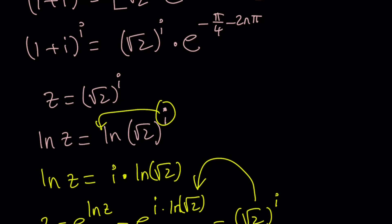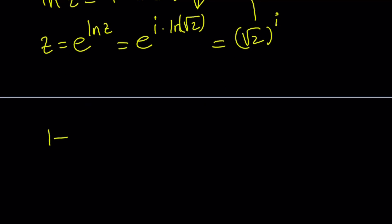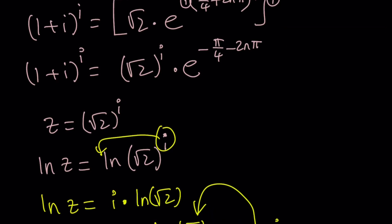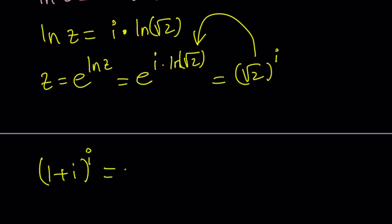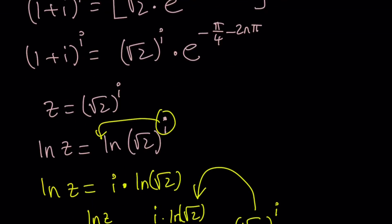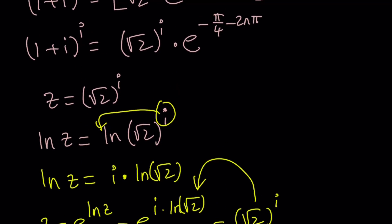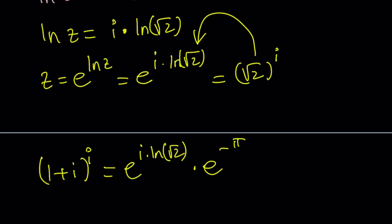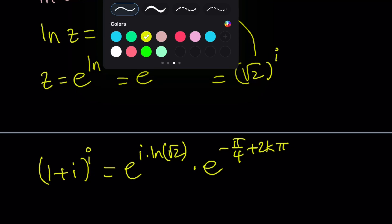So plugging back in, we have 1 plus i to the power i equals e to the power i·ln(√2), times e to the power negative (π/4 plus 2nπ). Since n is an integer, we can relabel and write the answer as e to the power (i·ln√2) times e to the power negative (π/4 + 2kπ), where k is any integer. That brings us to the end of this video.